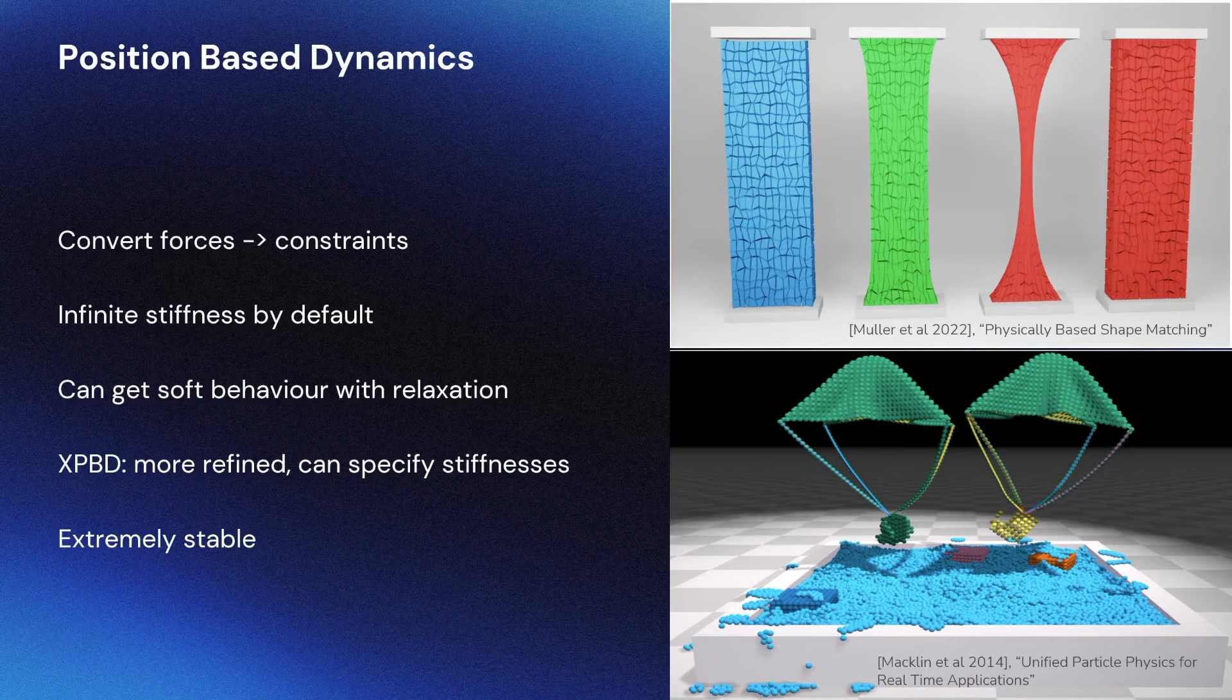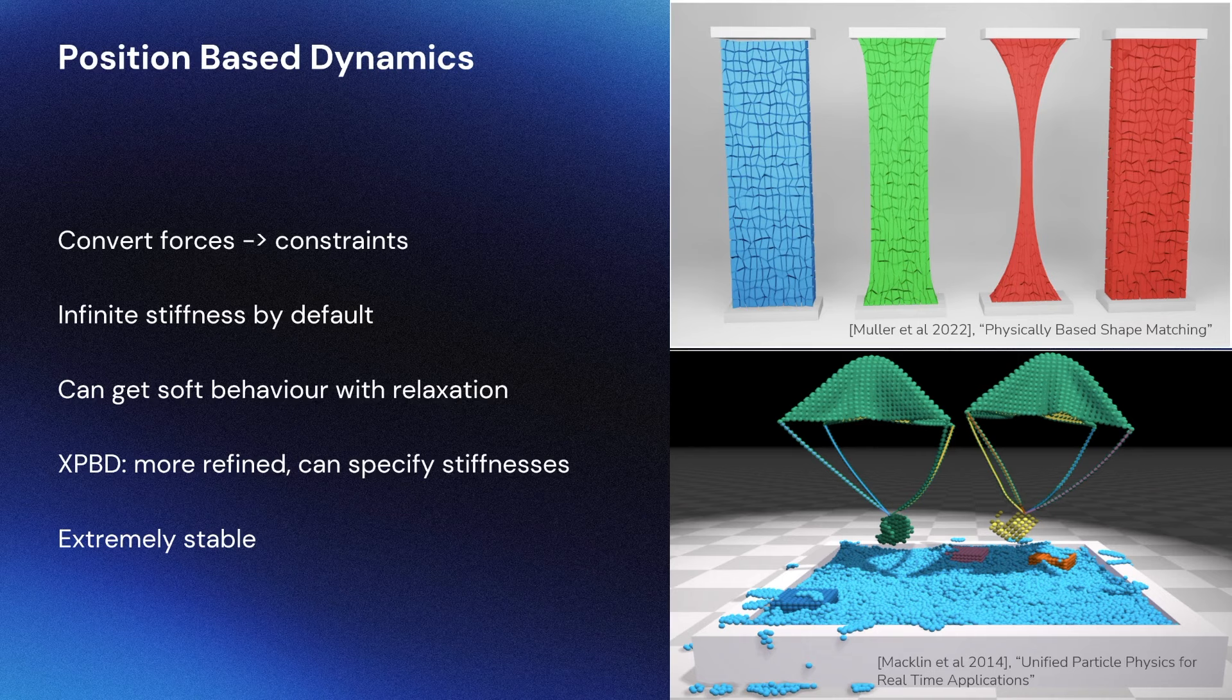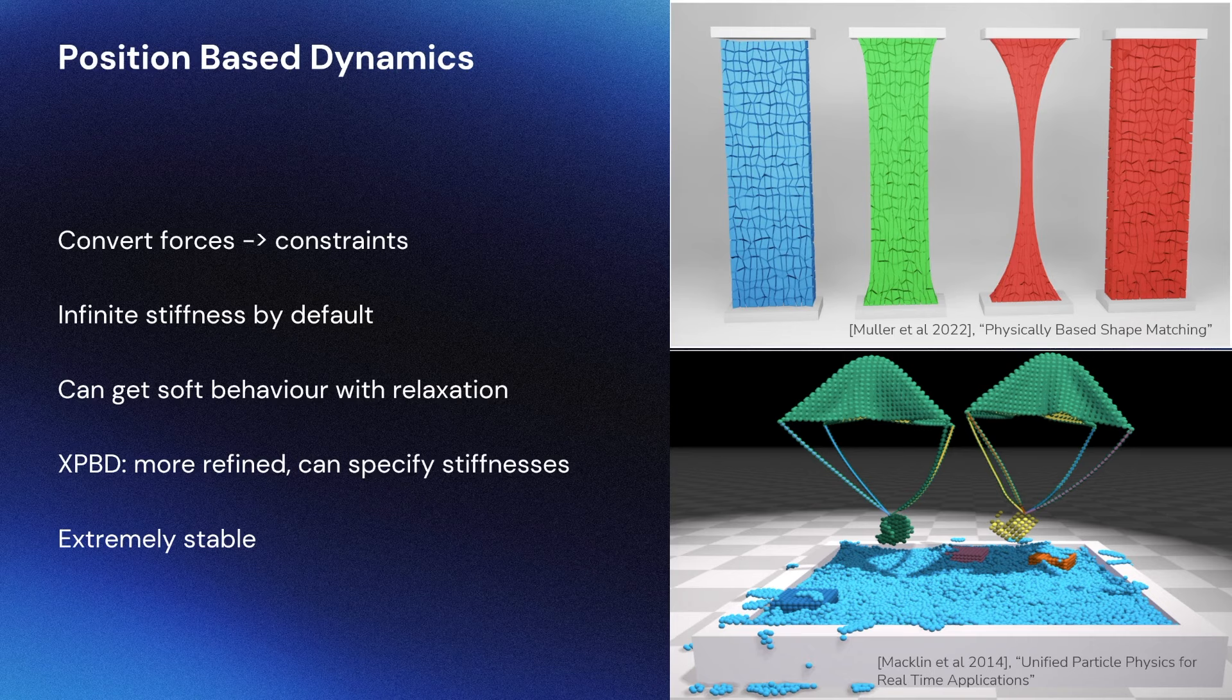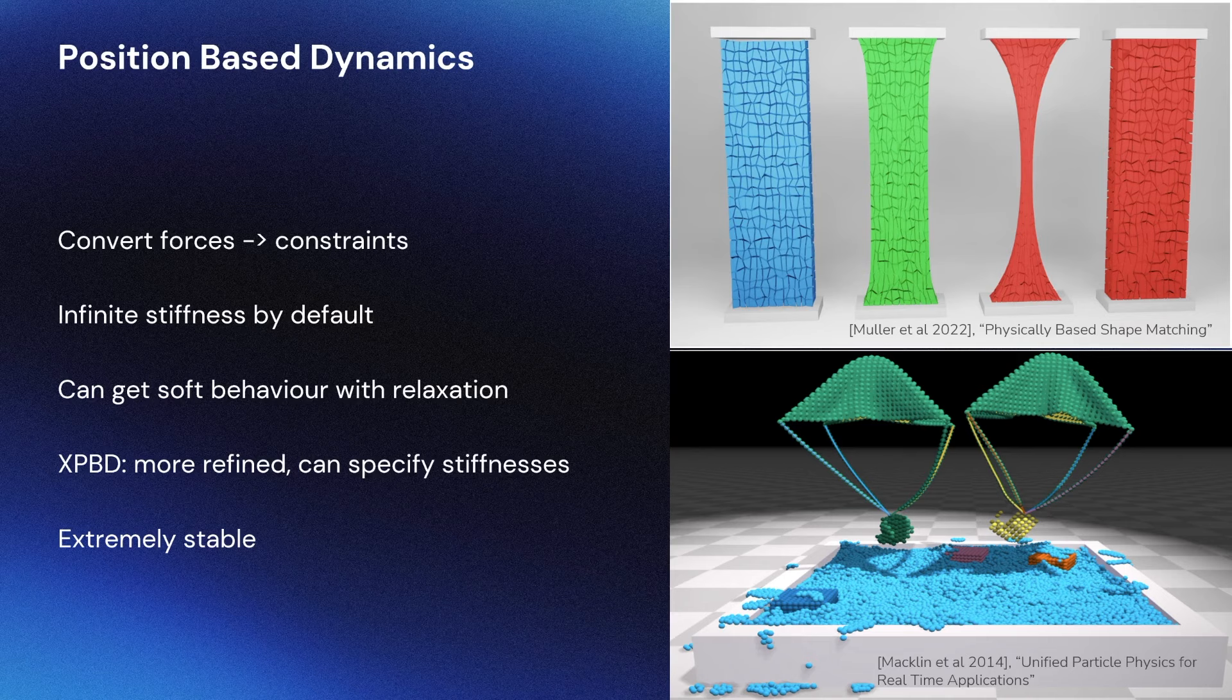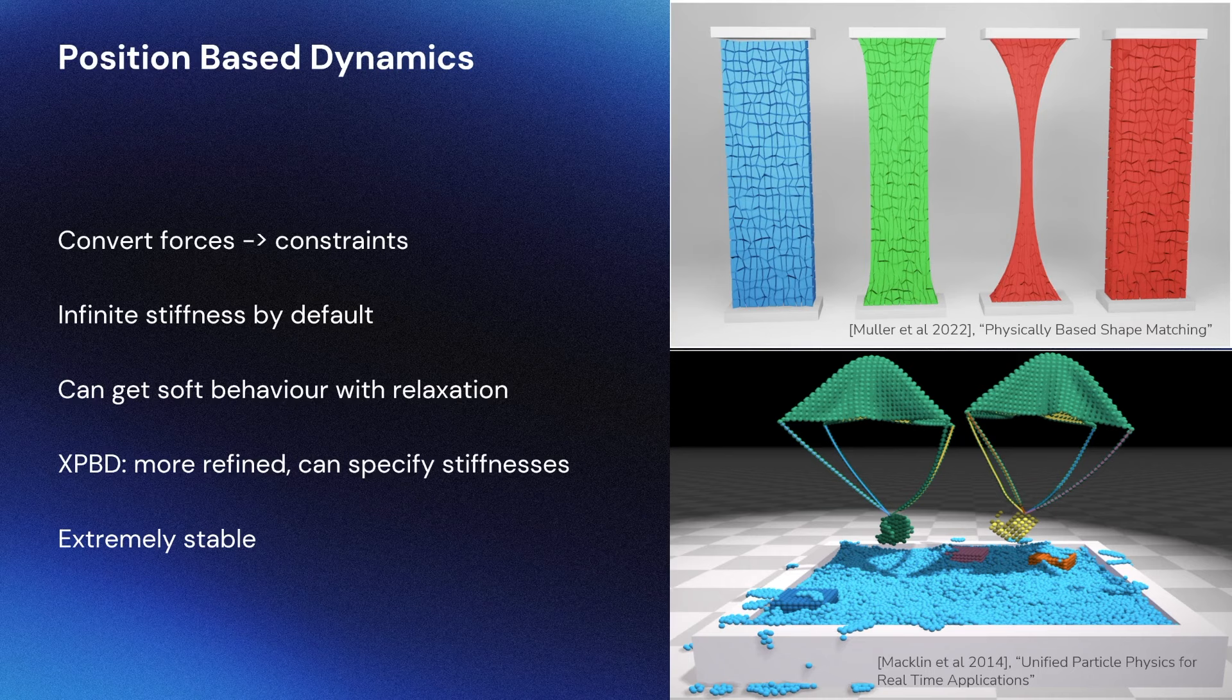When doing real-time simulations, we often turn to position-based dynamics to avoid these stability issues. In this method we represent materials as infinitely strong constraints that can be relaxed if necessary to get soft behavior. The big advantage of this is that we can solve constraints exactly and never overshoot. This makes it much more stable than explicit and even some implicit integration methods.